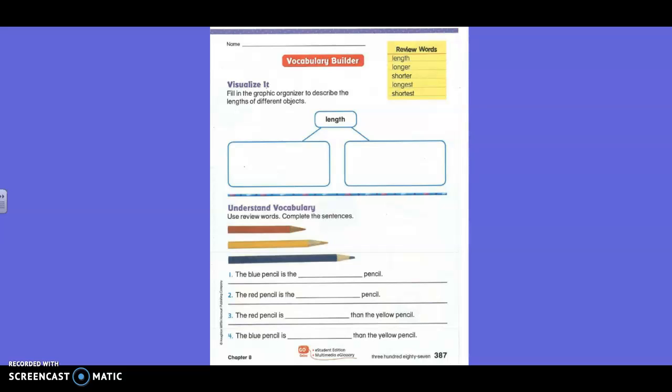Fill in the organizer. Describe the links of different objects. So, they put links right there. What do you think you put over here? Longer. You can put longer. Fill in the graphic. Describe the links of different objects. So, we're supposed to do two different objects using one of those words.